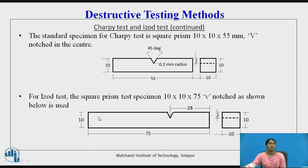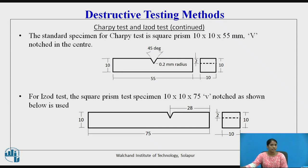In the impact test, there are two types of tests — Charpy test and IZOT test. The Charpy test is used in the United States, whereas the IZOT test is used in the United Kingdom.